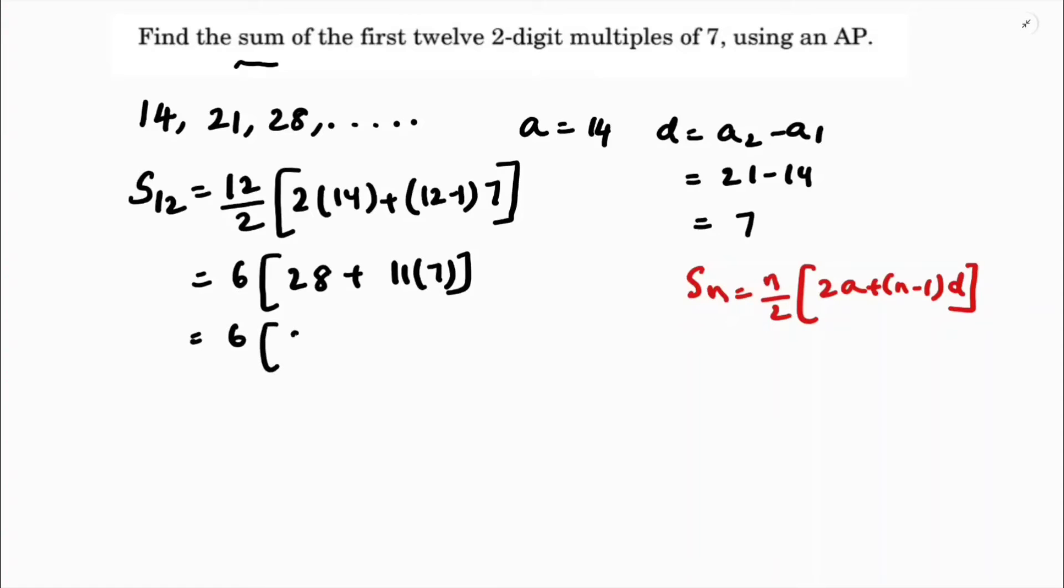So 6 times 28 plus 77. 28 plus 77 is 105, and 105 times 6 is 630.